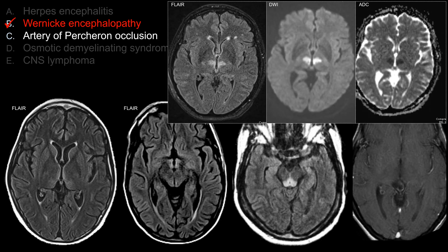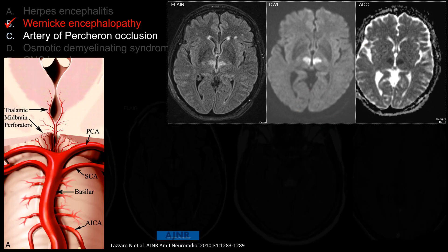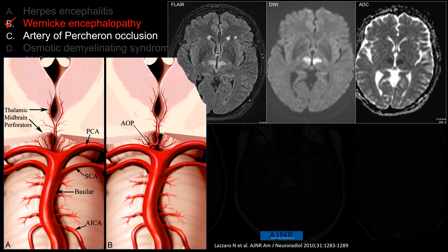This is an example of bilateral thalamic acute infarction due to artery of Percheron occlusion. Notice that there's abnormal FLAIR signal and restricted diffusion involving the medial thalami bilaterally without affecting other structures in the PCA territory. Normally, the medial thalami are supplied by small perforating arteries originating from the tip of the basilar artery or from the proximal P1 segment. Artery of Percheron is an anatomical variant where a single trunk artery from a common origin supplies all the same structures including the medial thalami. In order to cause bilateral thalamic infarction in normal anatomy, you need a thrombosis large enough to obstruct both arteries — a typical basilar tip thrombosis, for example.